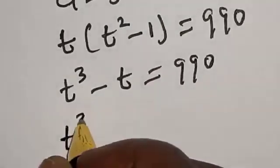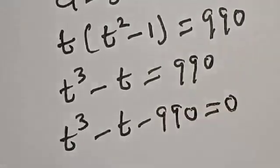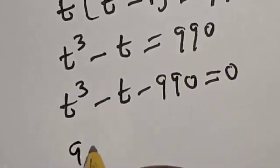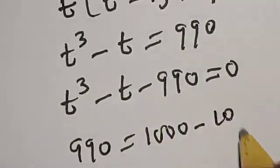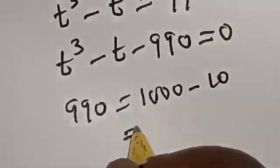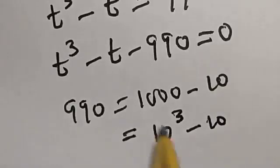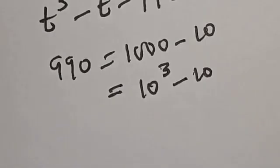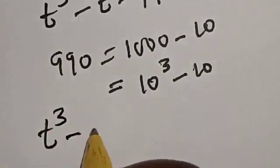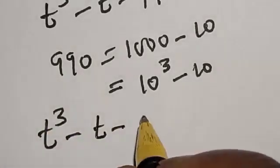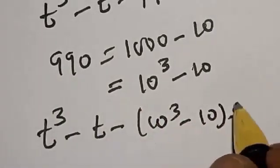Now let's bring everything to one side: t³ - t - 990 = 0. Note that 990 = 1000 - 10, which is the same as 10³ - 10. Substituting: t³ - t - (10³ - 10) = 0.